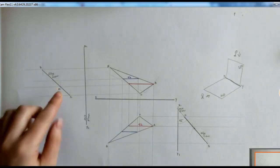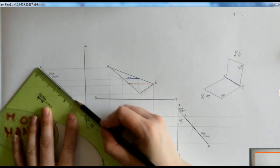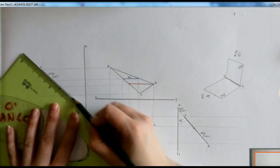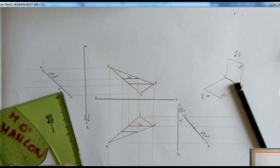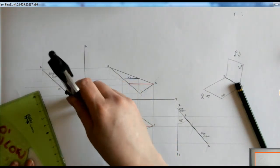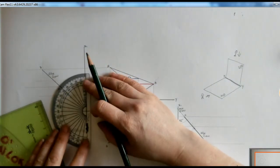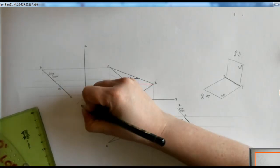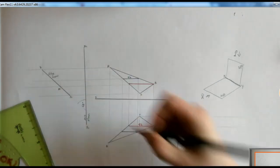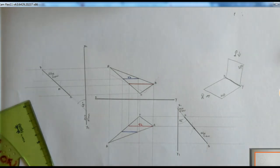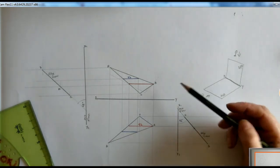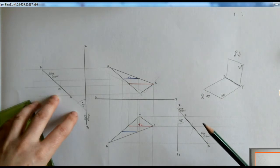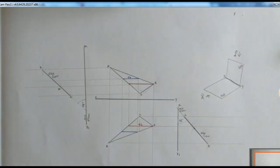I'm being asked for the edge view to the vertical plane, and this is the vertical plane, so I'm just going to extend it on. When I measure my angle I'm getting an angle of 48 degrees. So if I'm being asked for the angle the plane makes with the horizontal plane, I need to get an auxiliary elevation. If I'm being asked for the vertical plane, I need to get an auxiliary plan. That is the key takeaway from this.